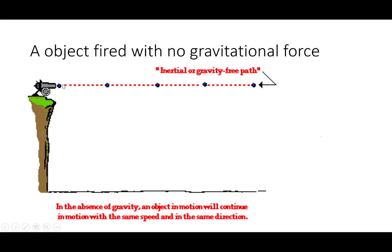Before we talk about how projectiles work, let's think about an object fired with no gravitational force. If we fire an object with no gravitational force, there are no forces acting on the object, so the net force equals zero, which means our acceleration is also going to be equal to zero. So we have constant velocity motion. For equal amounts of time, we'll travel an equal horizontal distance. This is our inertial path.